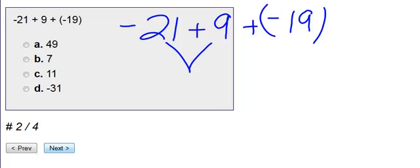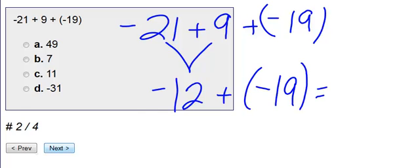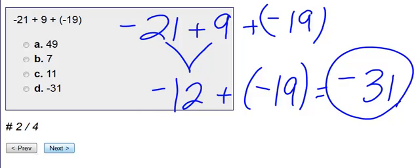We have negative 21 plus positive 9. We know we have more negatives than positives, so it has to be negative. 21 and 9 gives us negative 12. Then I'm going to bring down the negative 19. They're both negatives, therefore we get a negative. 19 and 12 is a total of 31 negatives. So our final answer is negative 31. In this case, it is choice D.